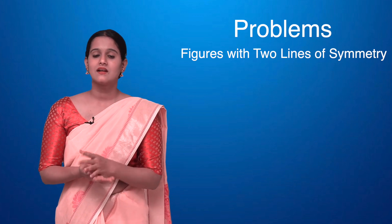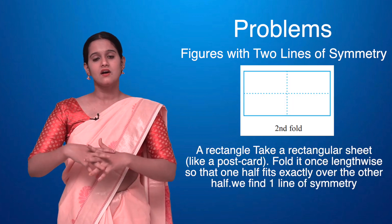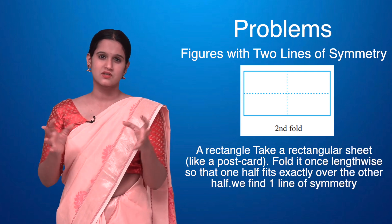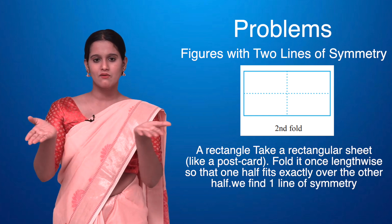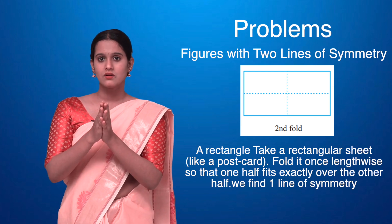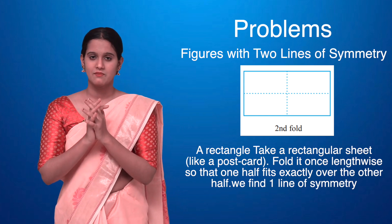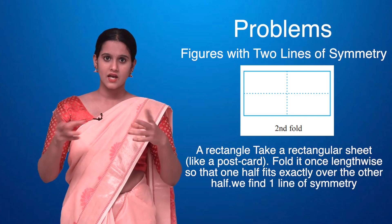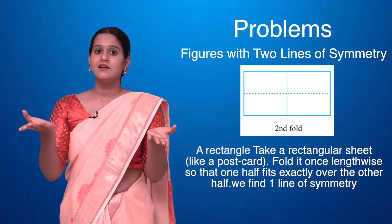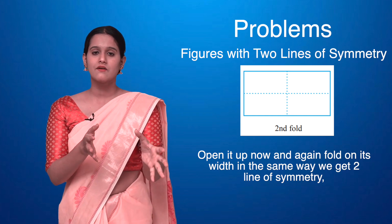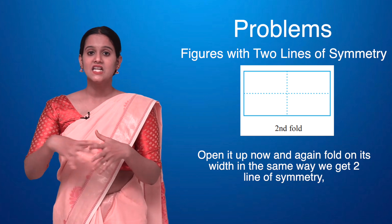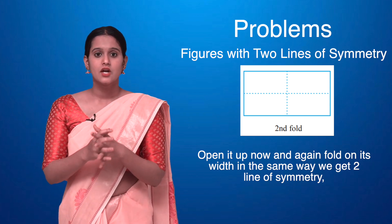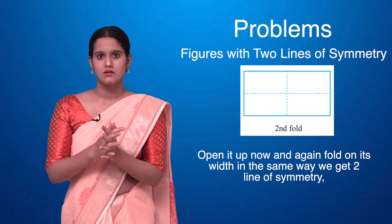Now let's look at the rectangle. I'll take a rectangular sheet — consider a postcard. I'll fold it lengthwise once, and there is a horizontal line of symmetry. Now I'll fold it vertically, and the other half is symmetric to the first half. So this rectangle has two lines of symmetry in total.